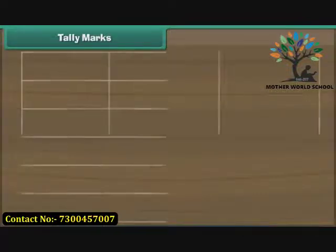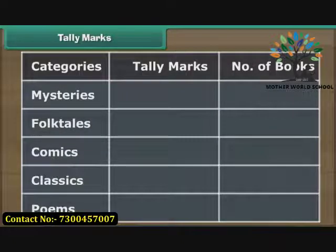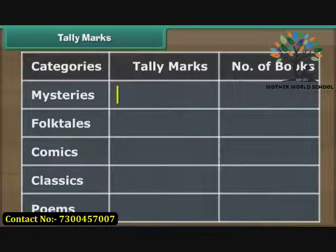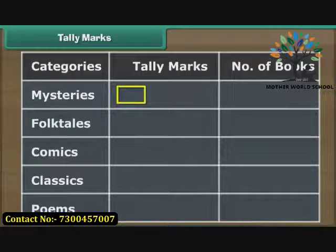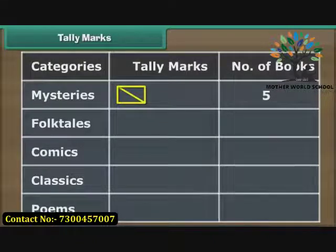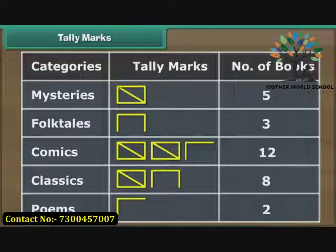Tally marks. Now, let us organize Ravi's data with the help of tally marks. Make three columns: categories, tally marks and number of books. Write down the five different categories under the categories column. Draw a vertical line against the mysteries category for the first book, a horizontal line for the second, a vertical line for the third, a horizontal line for the fourth to complete the rectangle, and represent the fifth book with a line drawn between two opposite ends of the rectangle. We repeat the exercise for other categories of books.